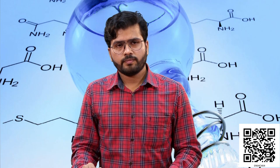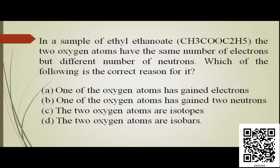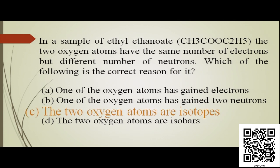Let us take another example. In a sample of ethyl ethanoate, the formula is in front of you. The two oxygen atoms have the same number of electrons but different number of neutrons. Which of the following is the correct reason for it? If the number of electrons is same, that means the number of protons is also same. Number of protons same but number of neutrons different — protons same means atomic number same, and when you add the neutrons, mass number will be different. Species having same atomic number but different mass number are called isotopes. So the answer to this question will be option C — the two oxygen atoms are isotopes.